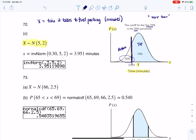This becomes a percentile problem because I'm looking for a value of my variable that is this cutoff. So then I head over to inverse norm. I want the 30th percentile, 5 and 2 for mean and standard deviation. The number the calculator pops back is 3.951, and my units are minutes.